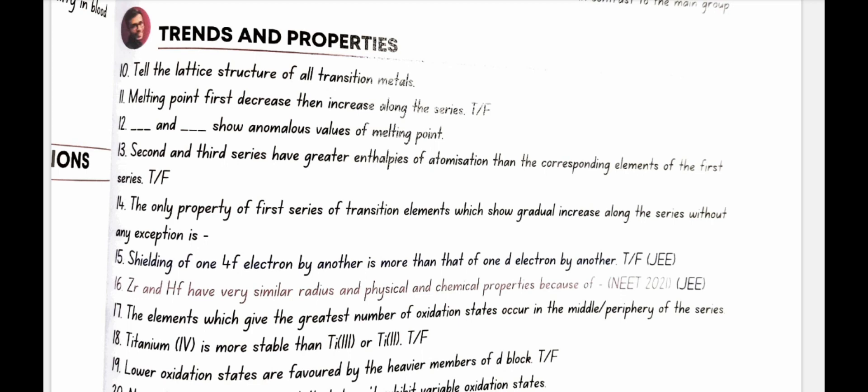The elements which give the greatest number of oxidation states occur in the middle or periphery of the series. In the middle of the series. Titanium 4 is more stable than titanium 3 or titanium 2. Yes, true.